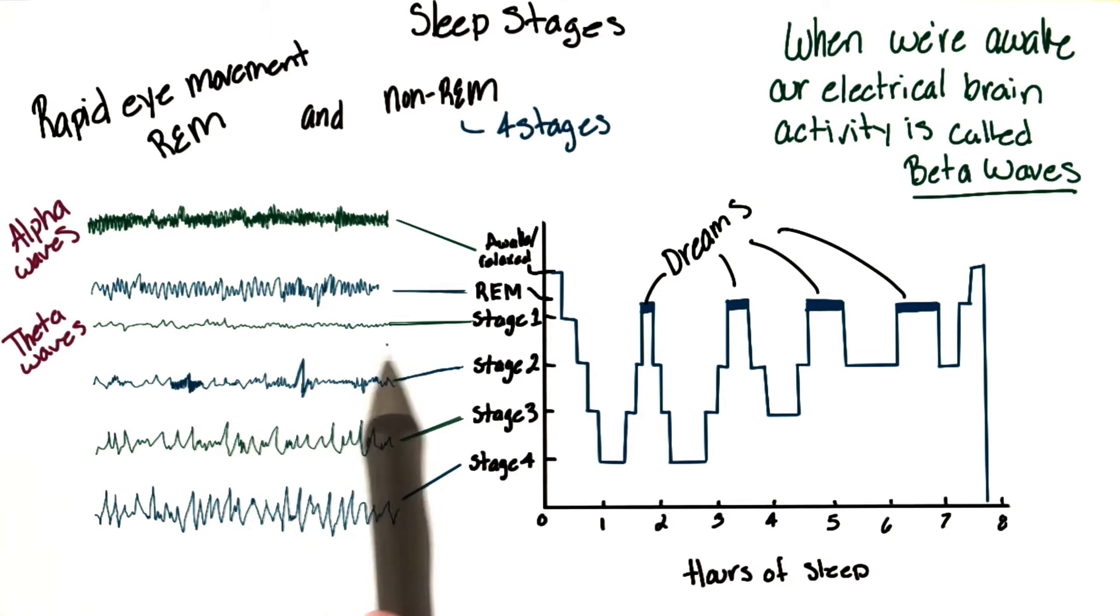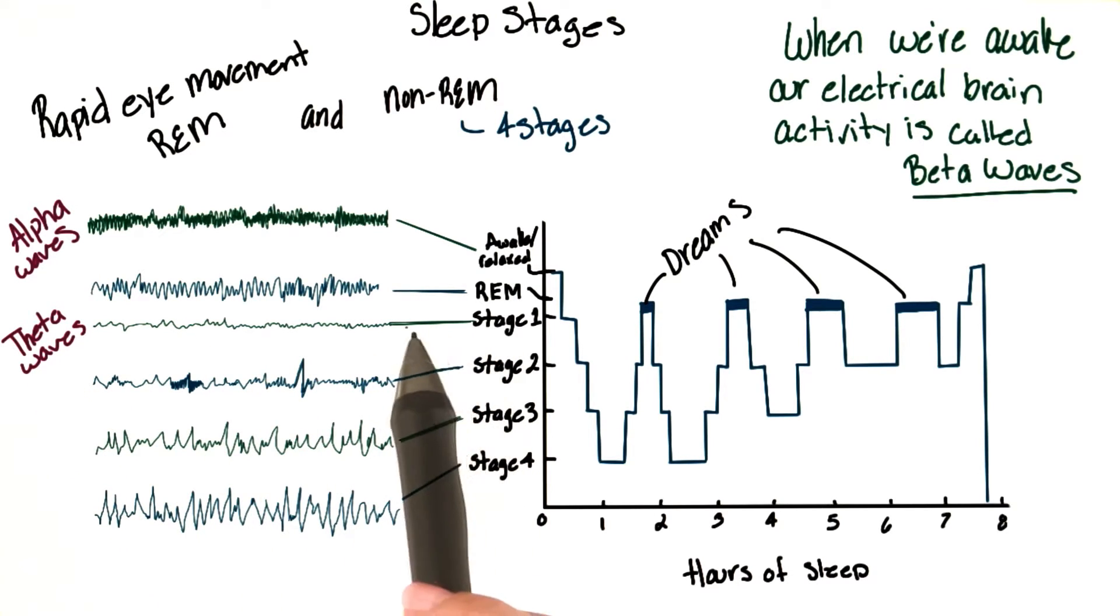In stage one, we could be easily aroused by outside stimuli, such as a phone ringing or someone walking around.